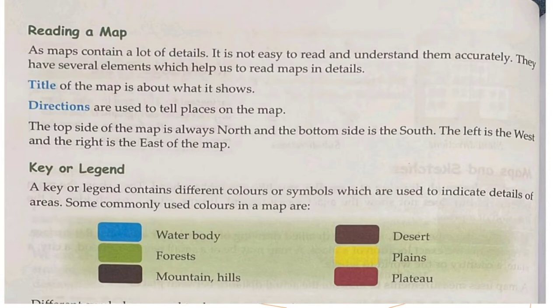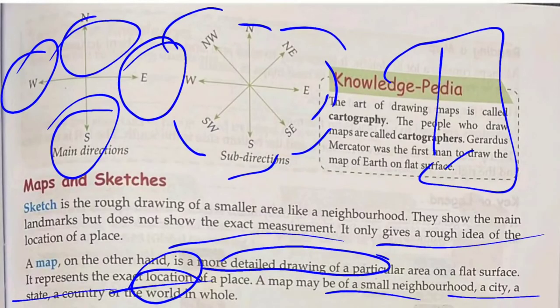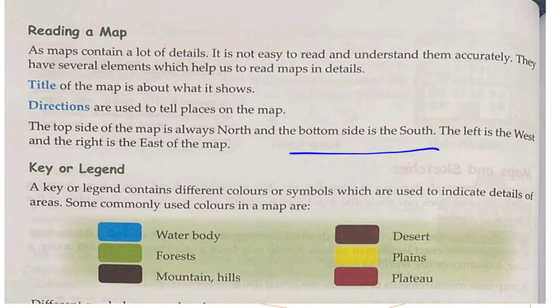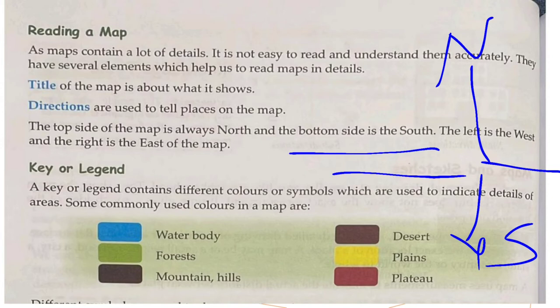Reading a map: A map contains many details and it is not easy to read and understand them accurately. There are several elements which help us read maps in detail. For example, the title tells us what the map is about. The direction tells us about the places shown — the top side of a map always represents North, the bottom represents South, the left represents West, and the right represents East.